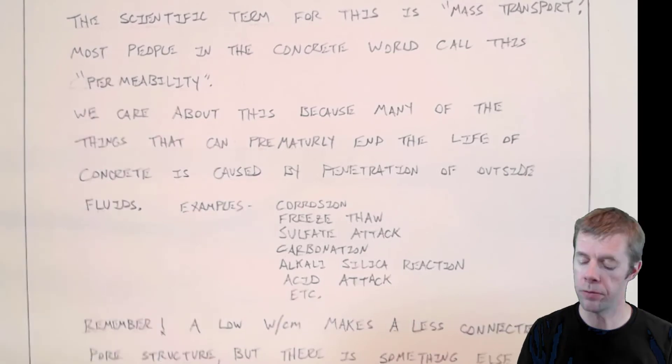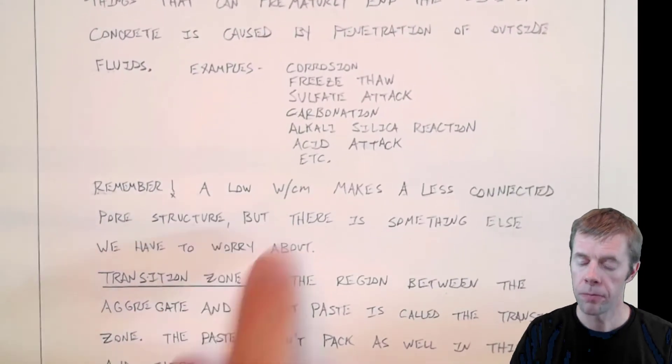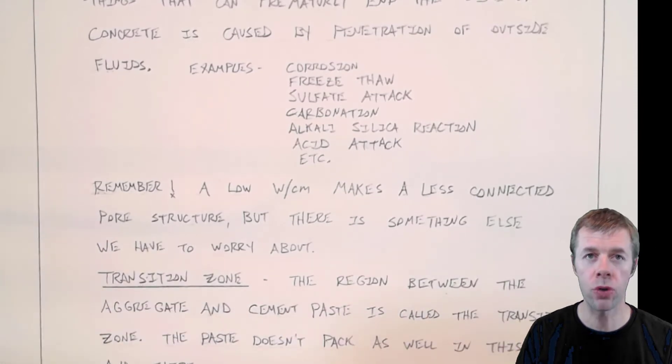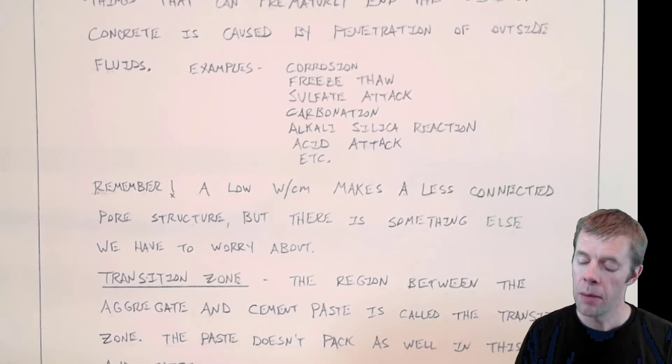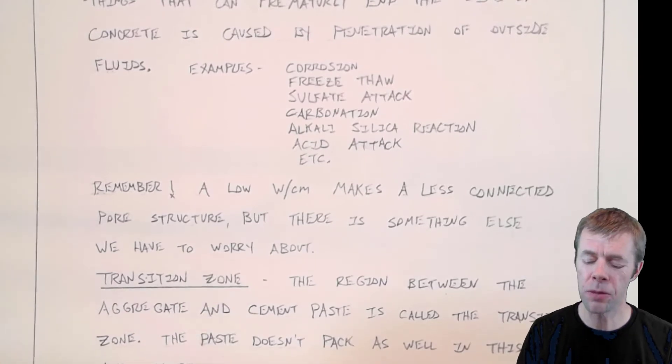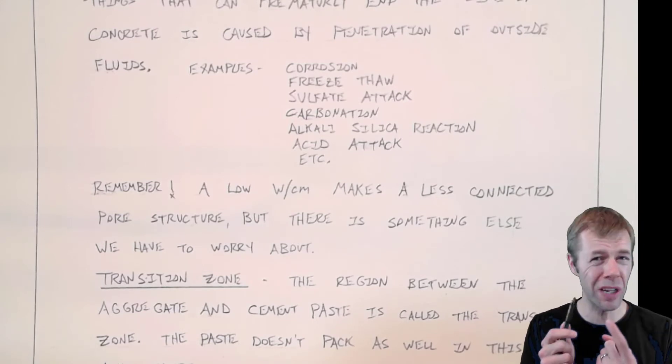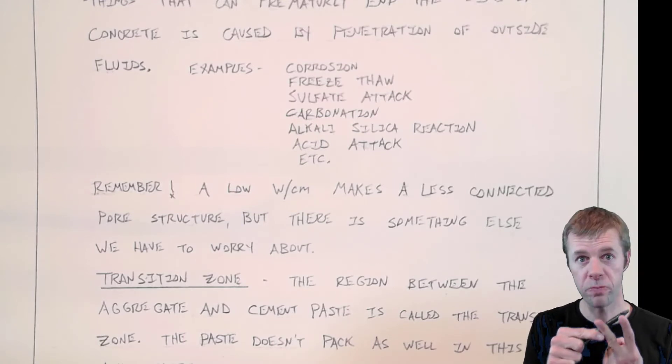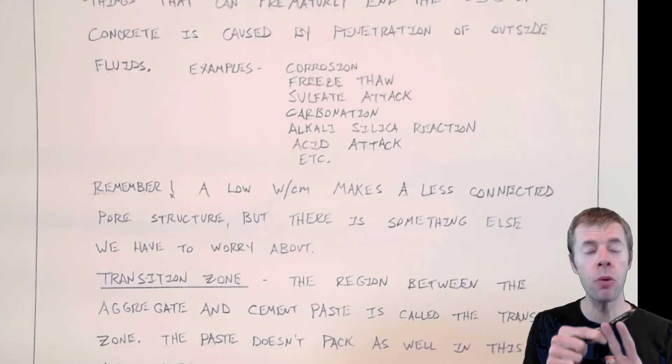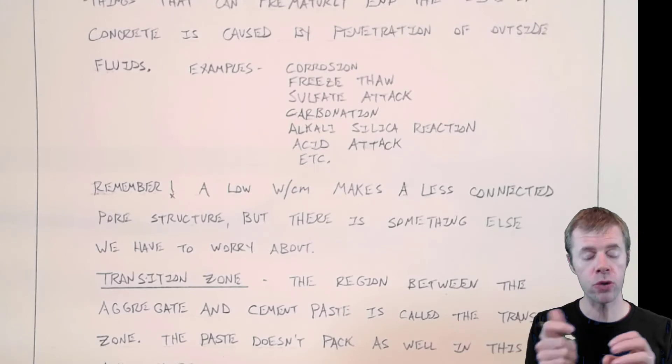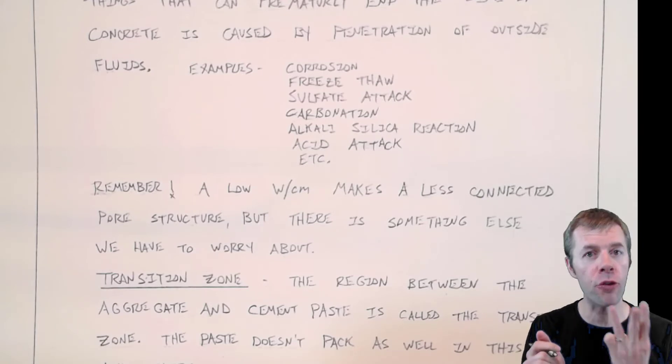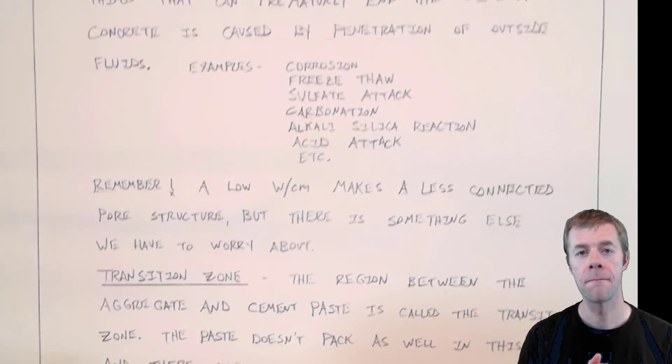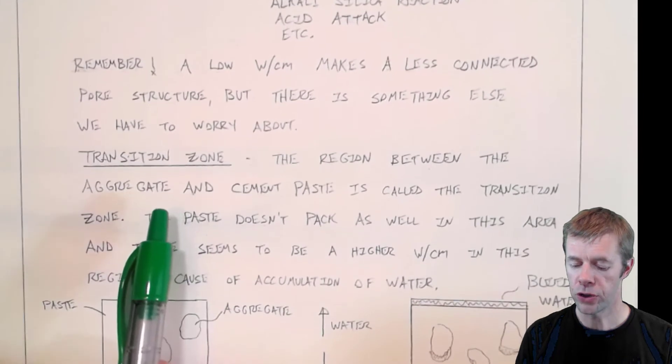If we could reduce this, everything about our concrete would end up being better. Remember, a low water cement ratio makes a less connected pore structure. And that's what we want. But there's something else that we have to worry about. And actually, just to build on this, we want to make sure we have close proximity of cement grains at the beginning. Then we want them to be close after placement. We want to get all those voids out. And then we want to promote hydration, so the microstructure grows and fills any spaces. We want to do all three of these things. But they're not enough. There's something else we have to worry about.